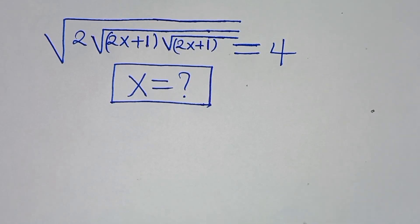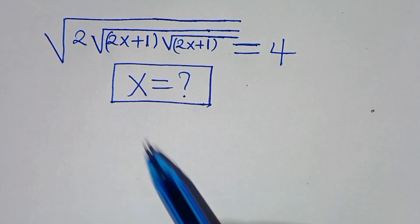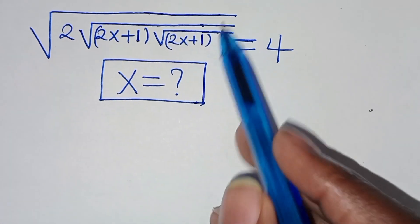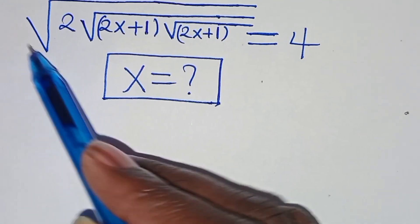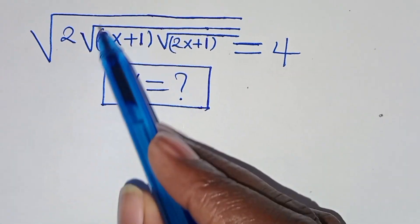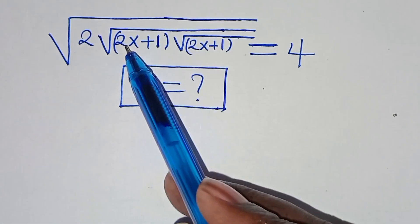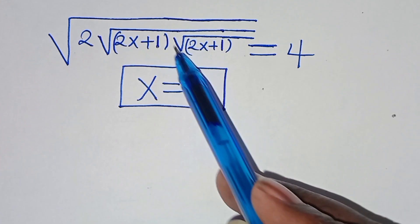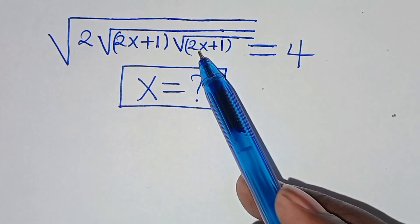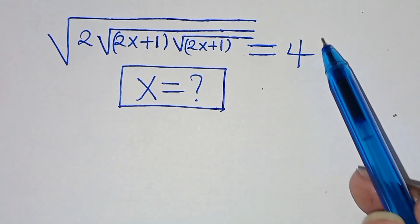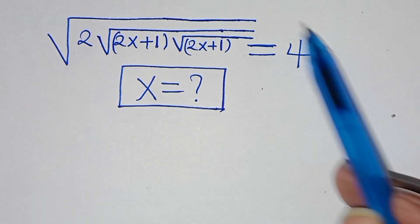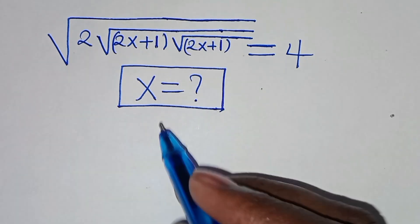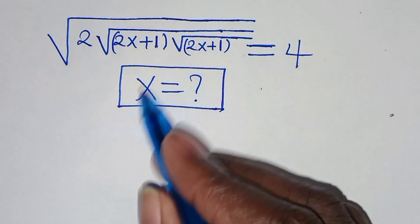Hello everyone, you are welcome to solve this nice square root math problem, which is the square root of 2 multiplied by square root of 2x plus 1 multiplied by square root of 2x plus 1. This is equal to 4. What are the values of x?